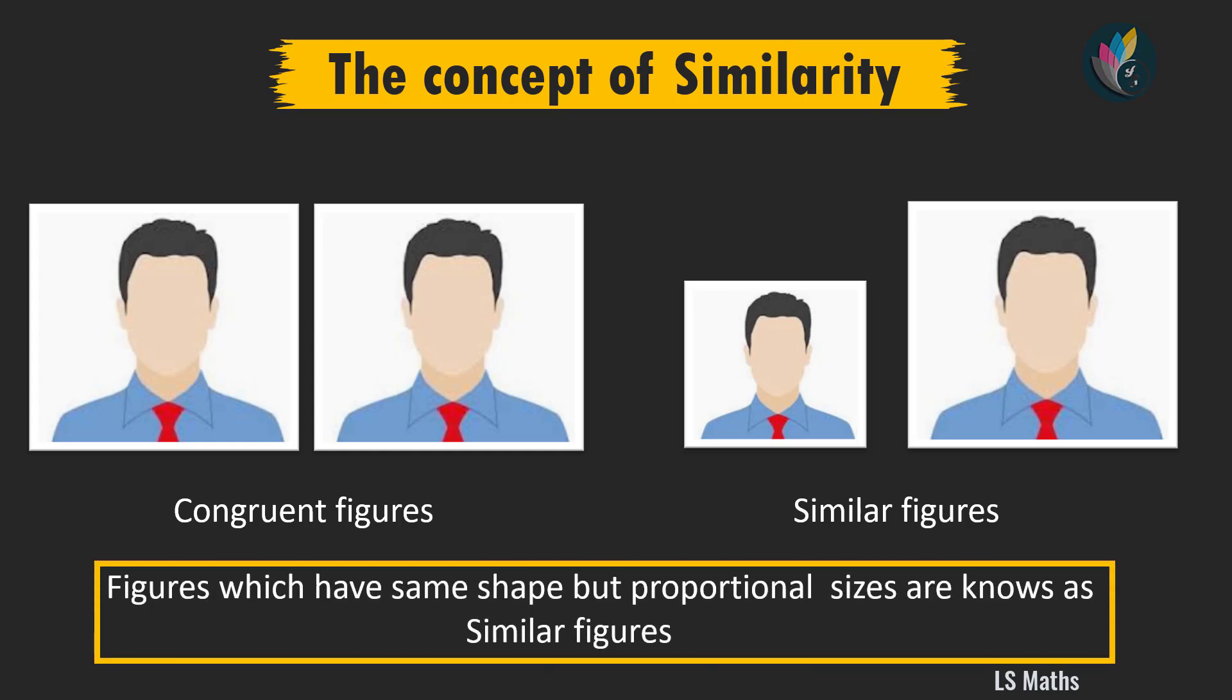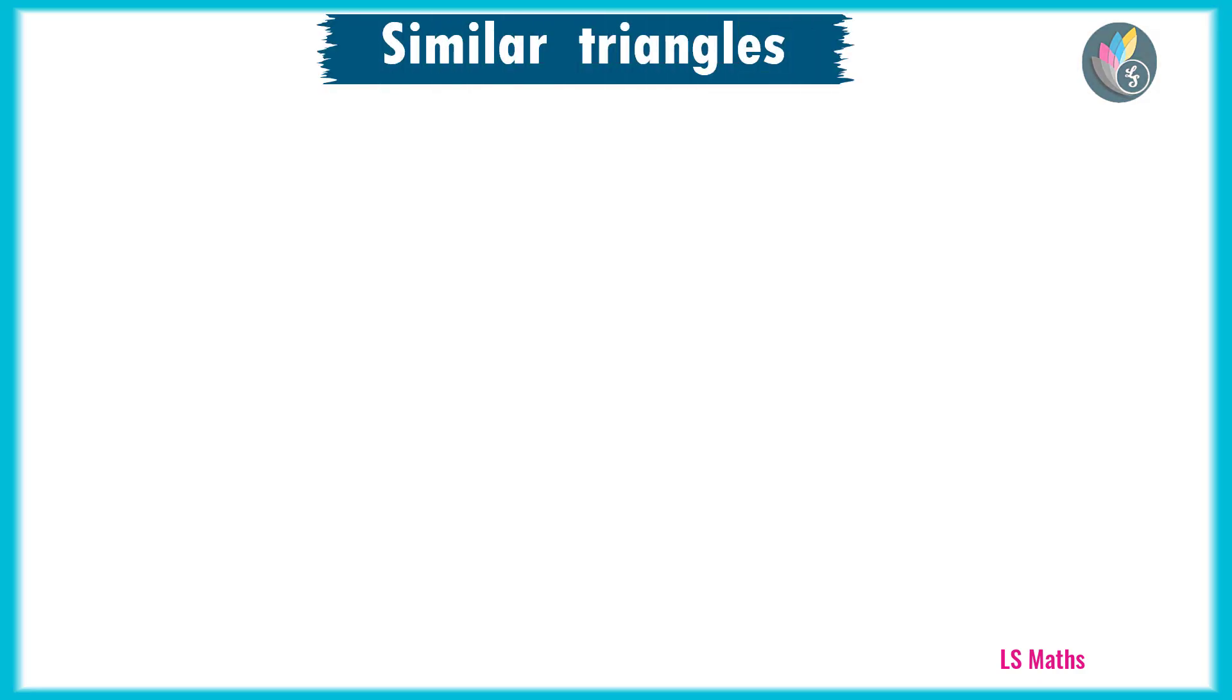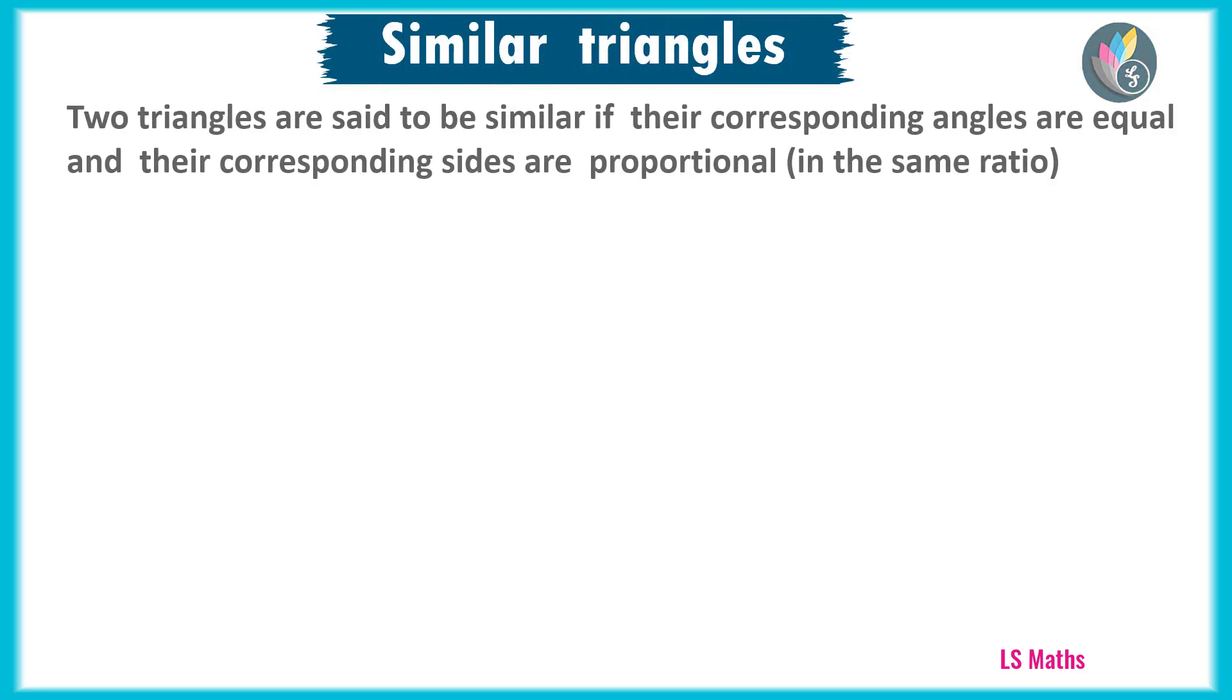So, figures which have same shape but proportional sizes are known as similar figures. With this basic idea, we are going to define similar triangles. Two triangles are said to be similar if their corresponding angles are equal and their corresponding sides are proportional, that is in the same ratio.